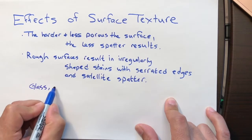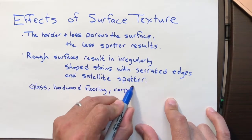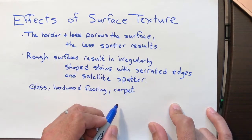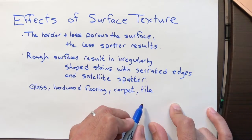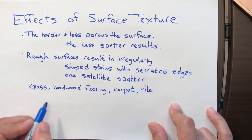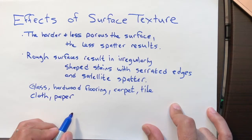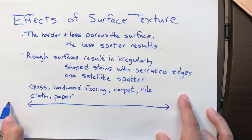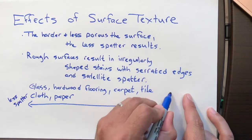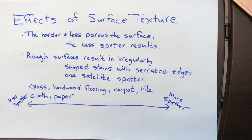You also have satellite spatter — the little droplets outside that radiate away from a blood droplet. Some examples of surfaces that blood can land on include glass, hardwood flooring, carpet, tile, cloth, and paper. Which of these would result in less spatter, and which would result in more spatter?